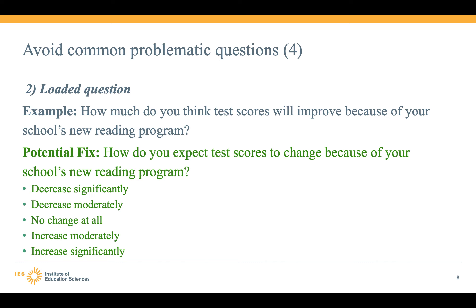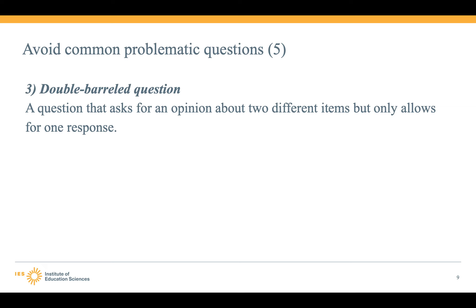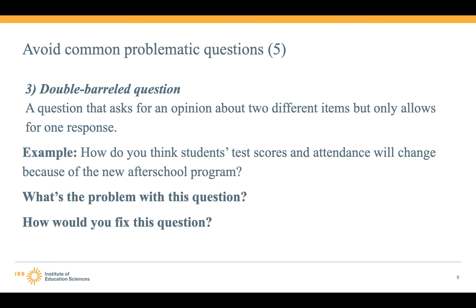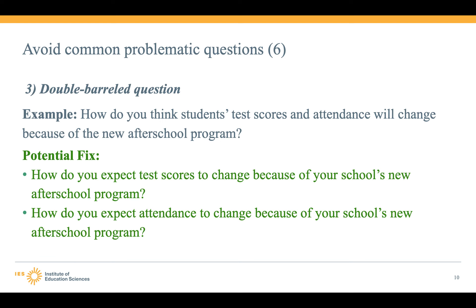The next problematic type is the double-barrel question — a question that asks for an opinion about two different things but allows only one response. For example: "How do you think the students' test scores and attendance will change because of the new after-school program?" That's asking about two very different things — test scores and attendance. One could improve and one could not. The simple fix, as folks in the chat are noting, is to ask them as two separate questions.